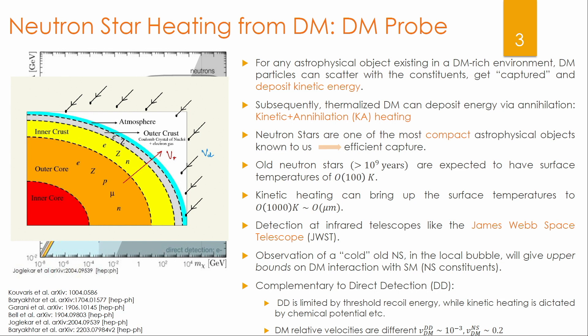All neutron stars of ages greater than giga-years are expected to have surface temperatures of order 100 Kelvin, and kinetic and annihilation heating can bring up these surface temperatures to order 1000 Kelvin. These order-1000-Kelvin neutron stars with black body radiation correspond to peaks at micron wavelengths, which can lead to detection at infrared telescopes like the recently active James Webb Space Telescope. Observation of a cold old neutron star with a surface temperature of order 1000 Kelvin can then lead to upper bounds on dark matter interaction with the constituents of neutron stars.